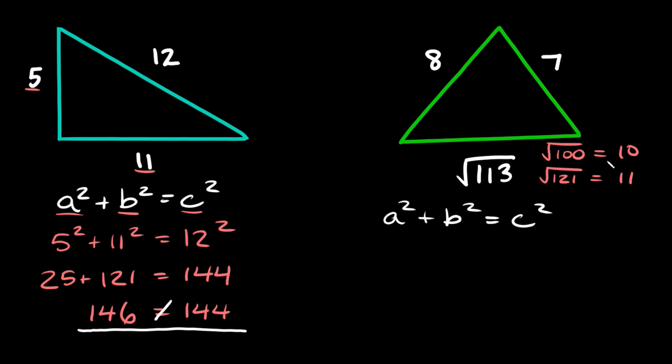So 10 point something. So that means this bottom side would be the longest side. So the two shorter sides we have are 8 and 7. So let's plug those in for a and b. Here we're going to get 8² + 7² = (√113)².